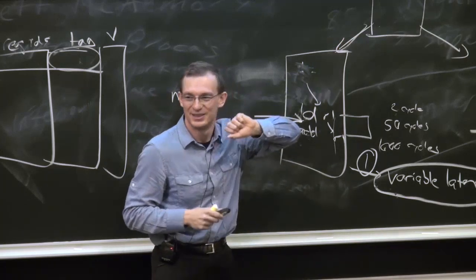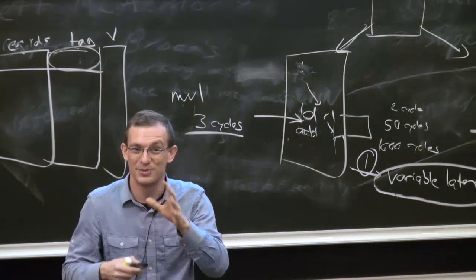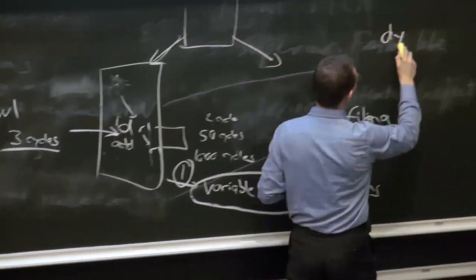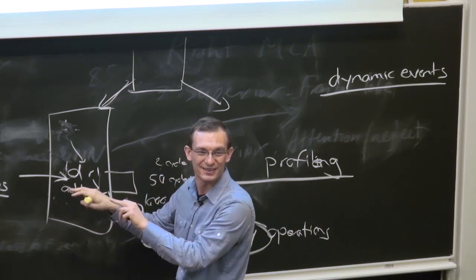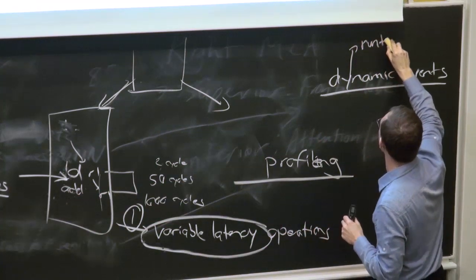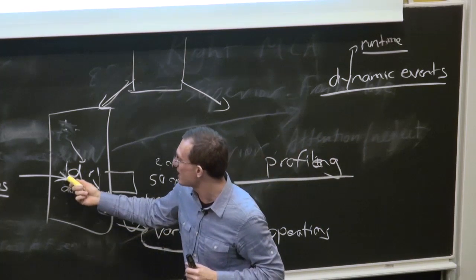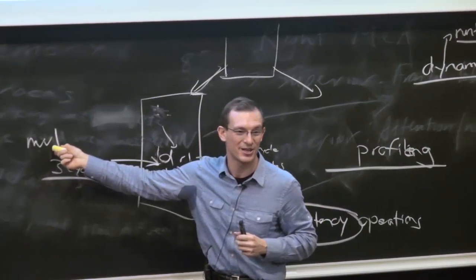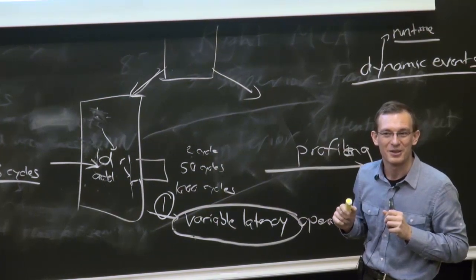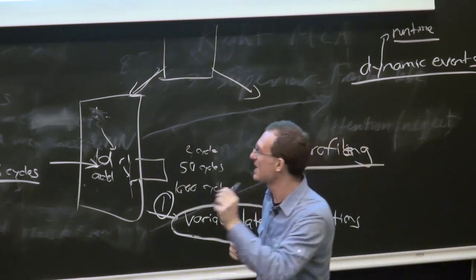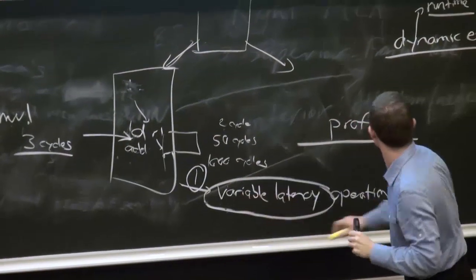More generally, the compiler doesn't know dynamic events — things determined at runtime. The latency of a load is variable based on a dynamic event: at runtime, this load might hit or miss in the cache. The compiler operates before runtime, at compile time. Another dynamic event the compiler doesn't know is branch direction — specifically, whether a conditional branch is taken or not taken.